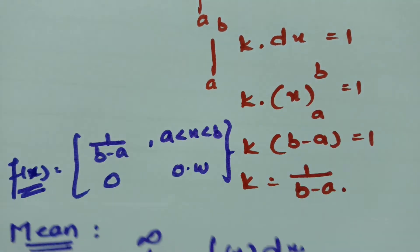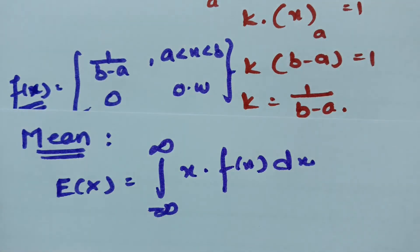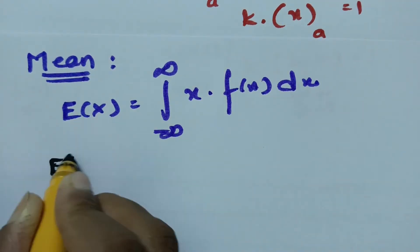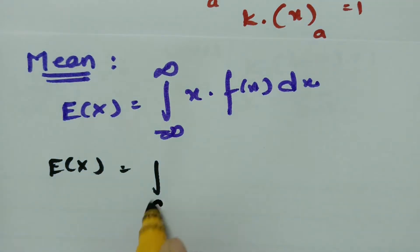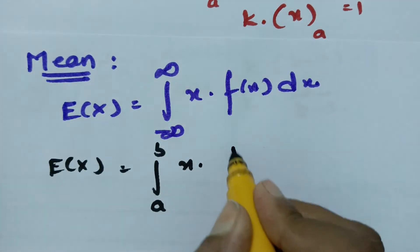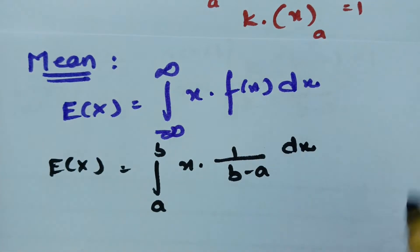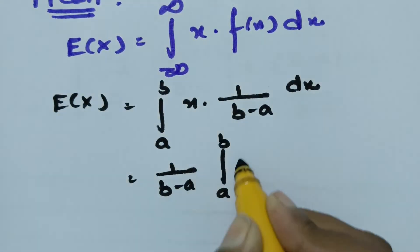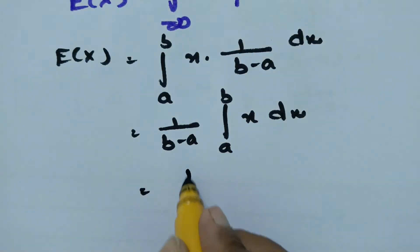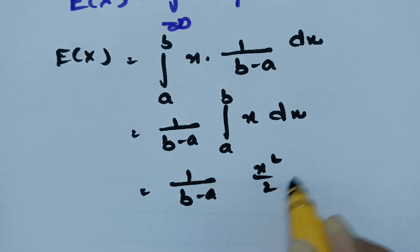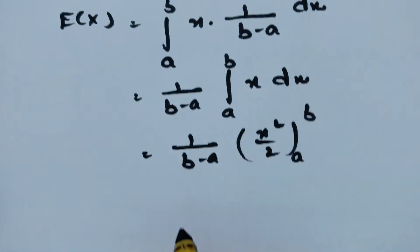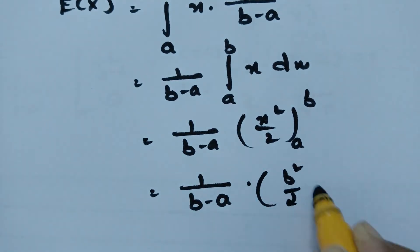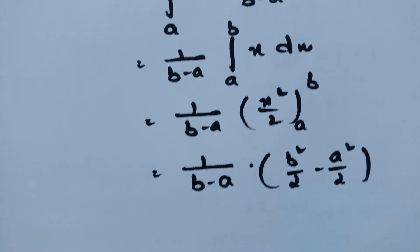We have f(x) equal to 1/(b minus a). Substituting, E(x) equals the integral from a to b of x times 1/(b minus a) dx. Bringing the constant outside gives 1/(b minus a) times the integral from a to b of x dx, which integrates to x squared over 2 evaluated from a to b.